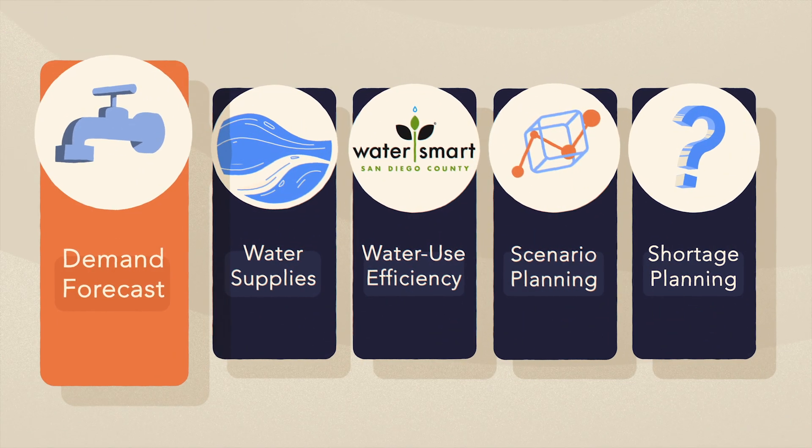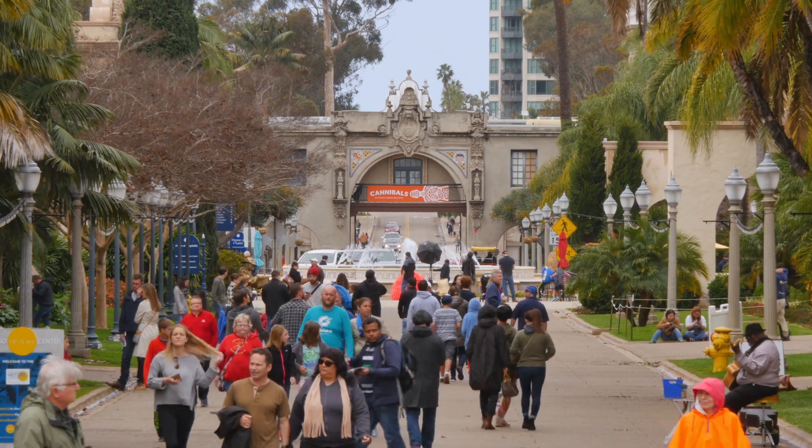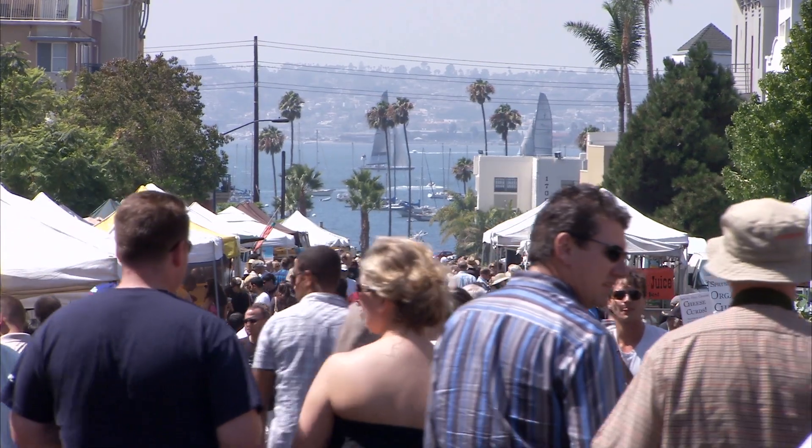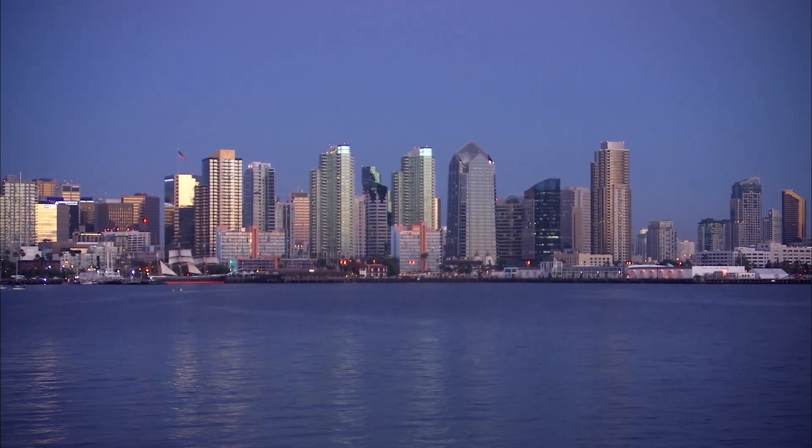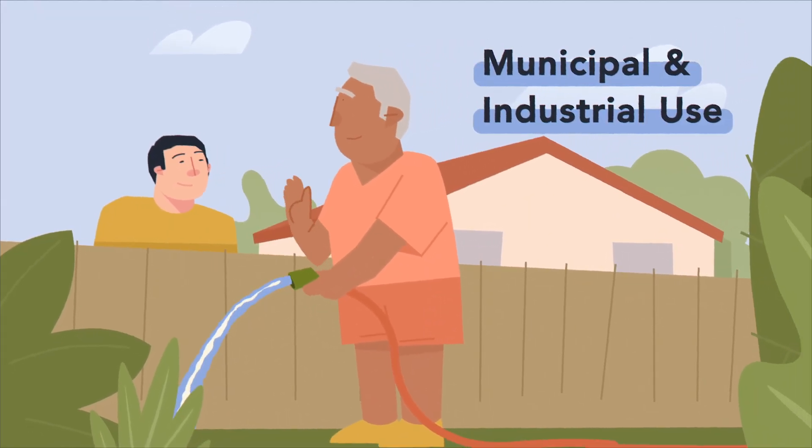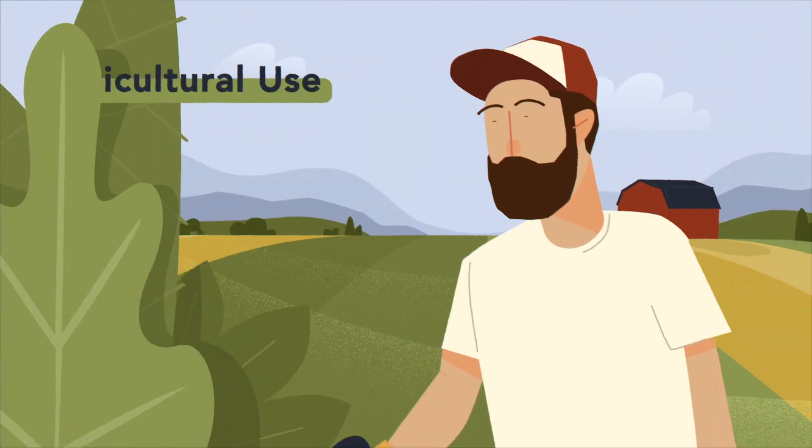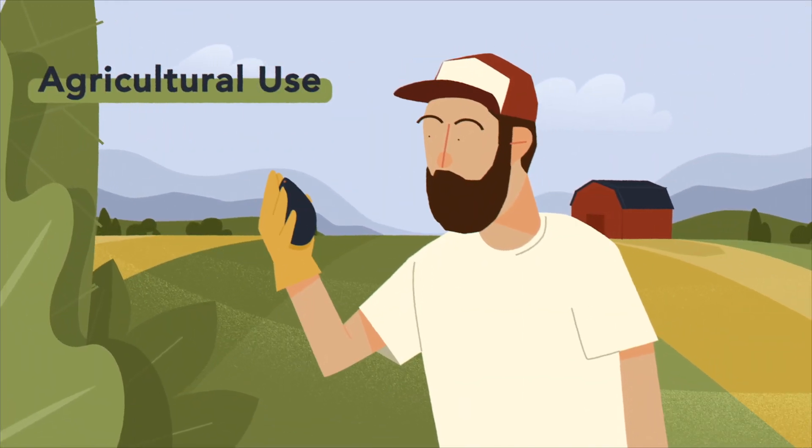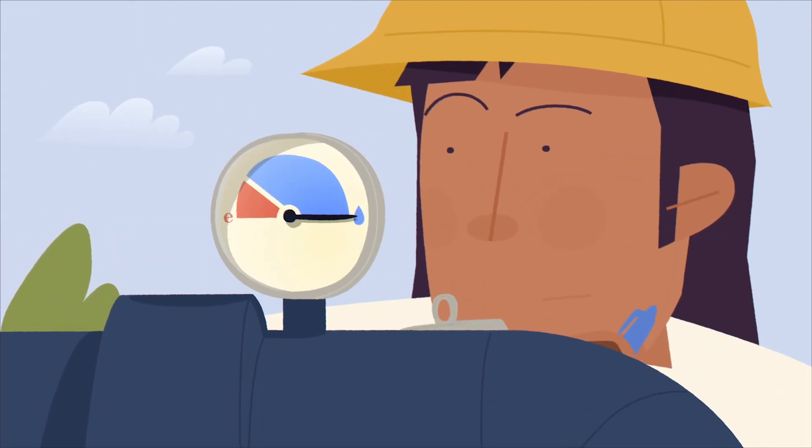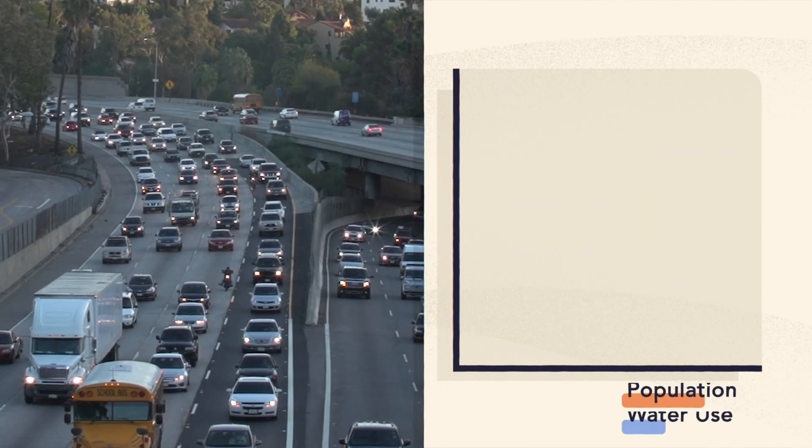So, let's dive into the five main elements of the plan. The first element is demand forecast. This estimates future water demands for the region's more than three million residents. Those demands fall into two classes of service: municipal and industrial water, used by homes and businesses, and agricultural water use. Accurate forecasting is critical to securing water supplies to meet these demands, especially when they vary over time.